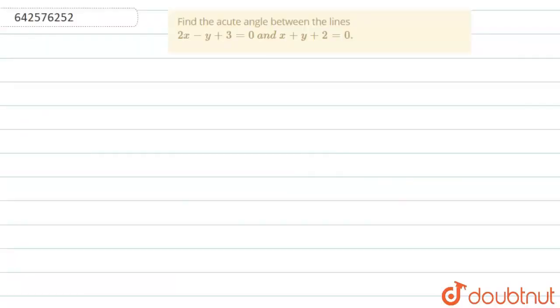Hello students, so the question is, find the acute angle between the lines 2x minus y plus c is equal to 0 and x plus y plus 2 is equal to 0.